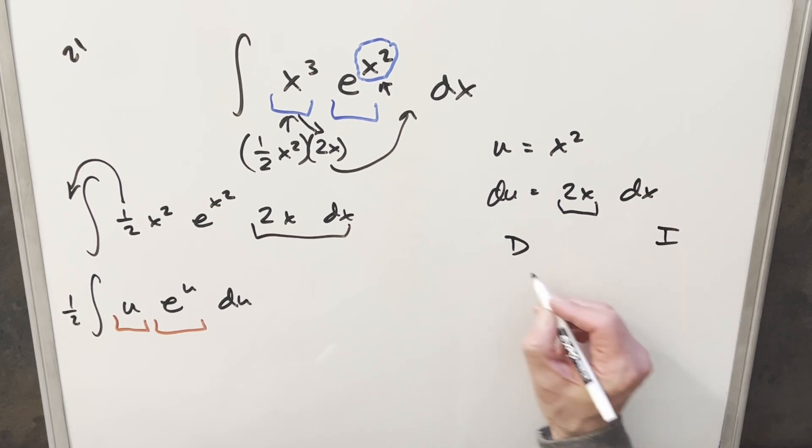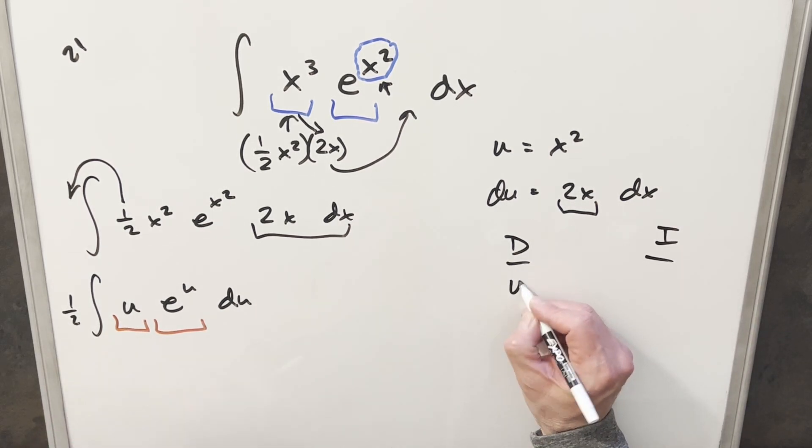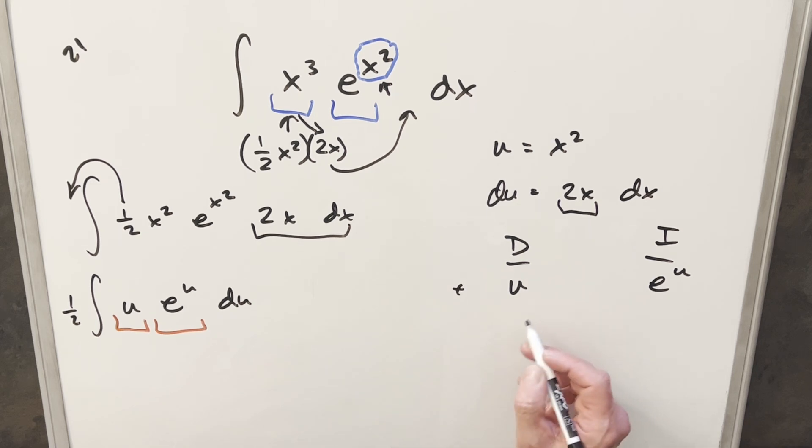We'll do this using the di method or tabular integration over here to the right. I want to differentiate u, and I want to integrate e to the u. e to the u is easy to differentiate or integrate, so this one doesn't really matter. But for the u, it's nice because it's going to resolve to 0. So let's just do this.